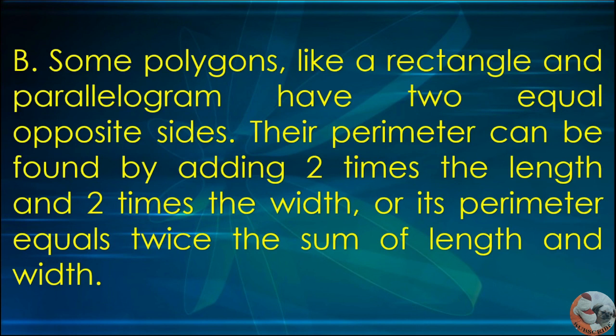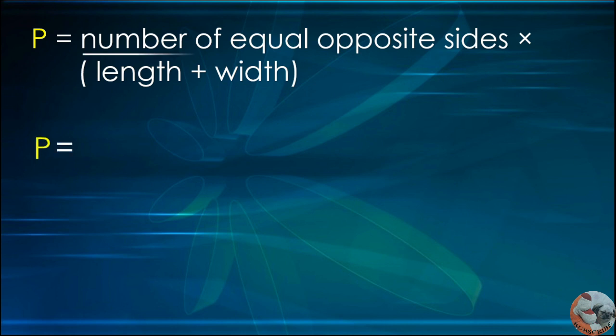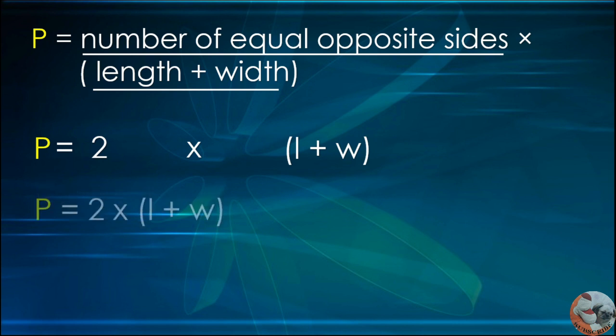Some polygons like a rectangle and parallelogram have two equal opposite sides. Their perimeter can be found by adding 2 times the length and 2 times the width, or its perimeter equals twice the sum of length and width. P equals 2 times the quantity length plus width. So the formula for the perimeter is equal to 2 times quantity L plus W.